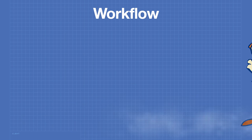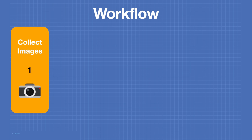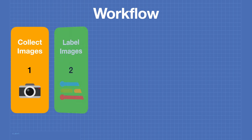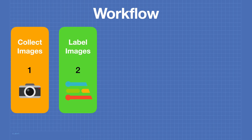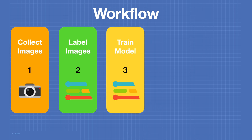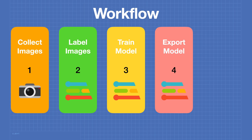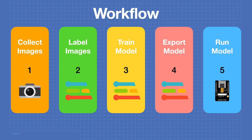Our workflow consists of five steps. Step one: collect images of our object. Step two: label those images. Step three: train a model using those images. Step four: export that model into code we can use. Step five: run the code on our ESP32. We'll be using Edge Impulse for steps two, three, and four, and we can even use it for step one as well.